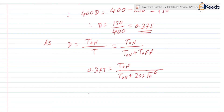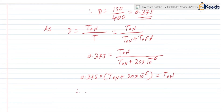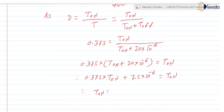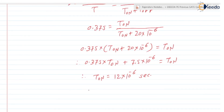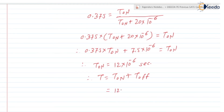From this we can write 0.375 × (Ton + 20 × 10⁻⁶) = Ton. Solving this equation gives Ton = 12 × 10⁻⁶ seconds. Therefore, total time period T = Ton + Toff = 12 × 10⁻⁶ + 20 × 10⁻⁶ = 32 × 10⁻⁶ seconds.